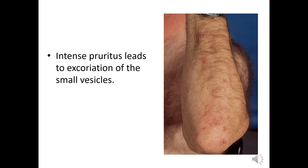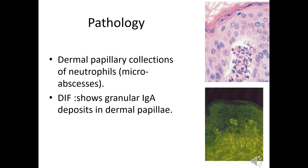The itching is so severe that by the time the patient comes to the dermatologist, there are many scratch marks, eroded vesicles, and papules. The pathology of dermatitis herpetiformis includes dermal papillary collection of neutrophils forming microabscesses — a mixture of neutrophils, dead cells, and cell debris visible under microscope. Direct immunofluorescence shows granular IgA deposits in the dermal papillae, so the whole reaction in dermatitis herpetiformis originates in the dermal papillae.